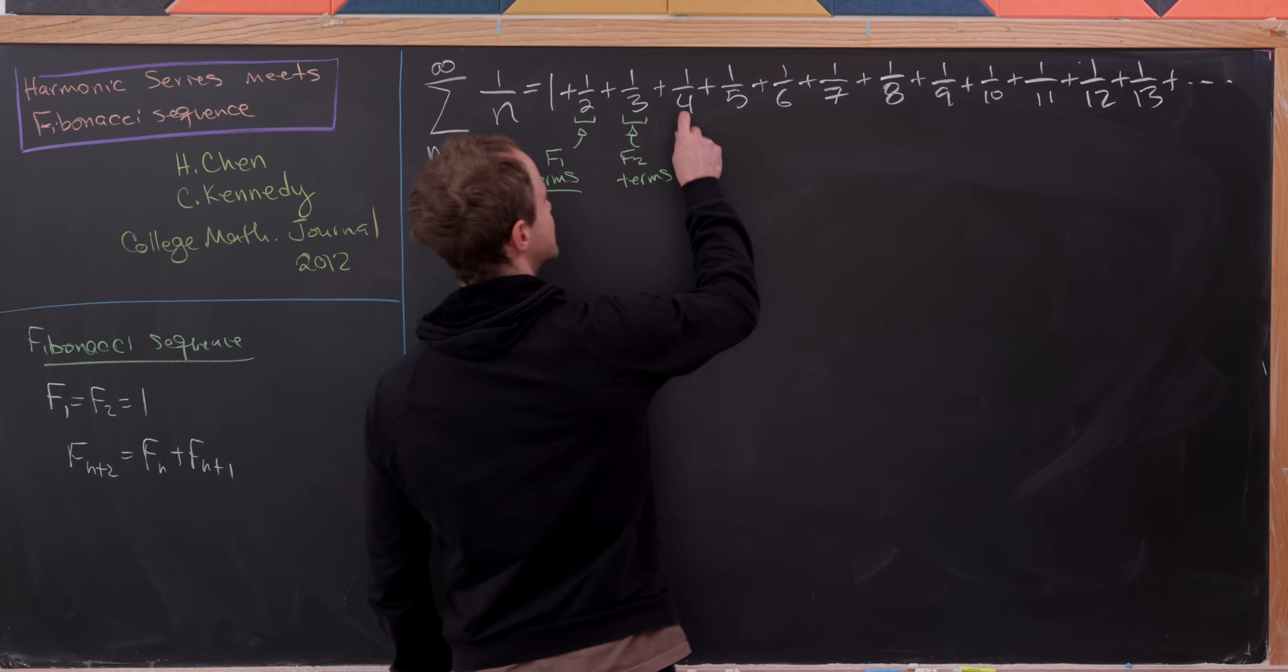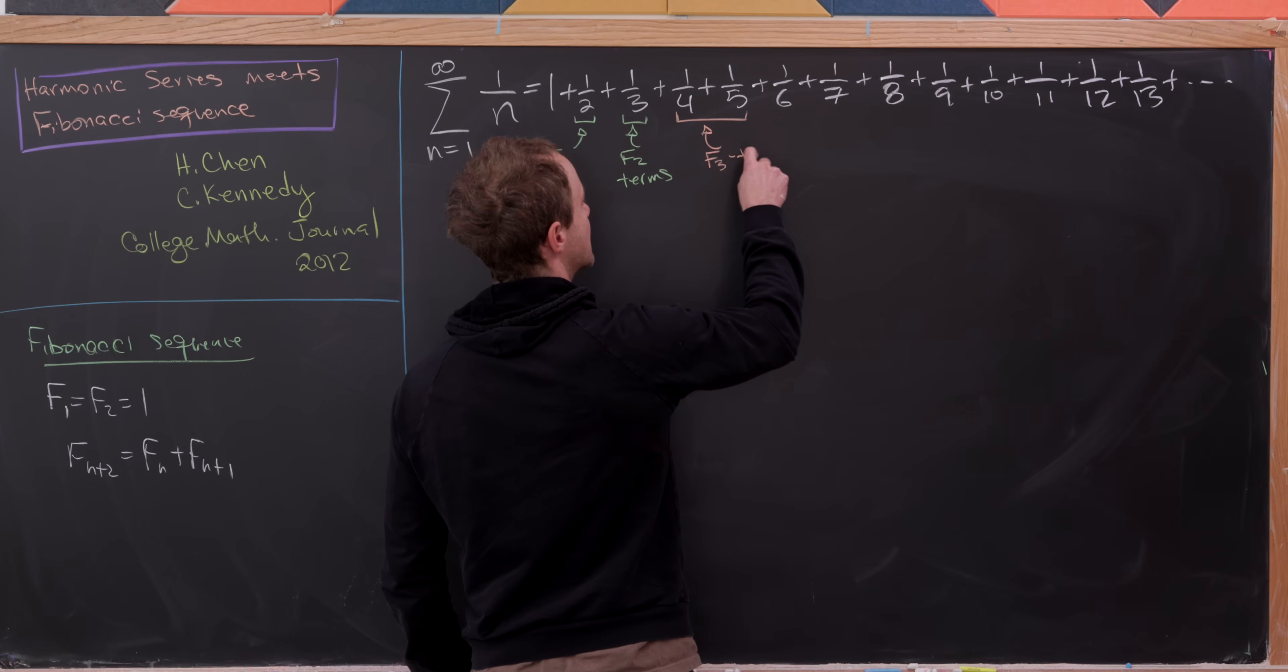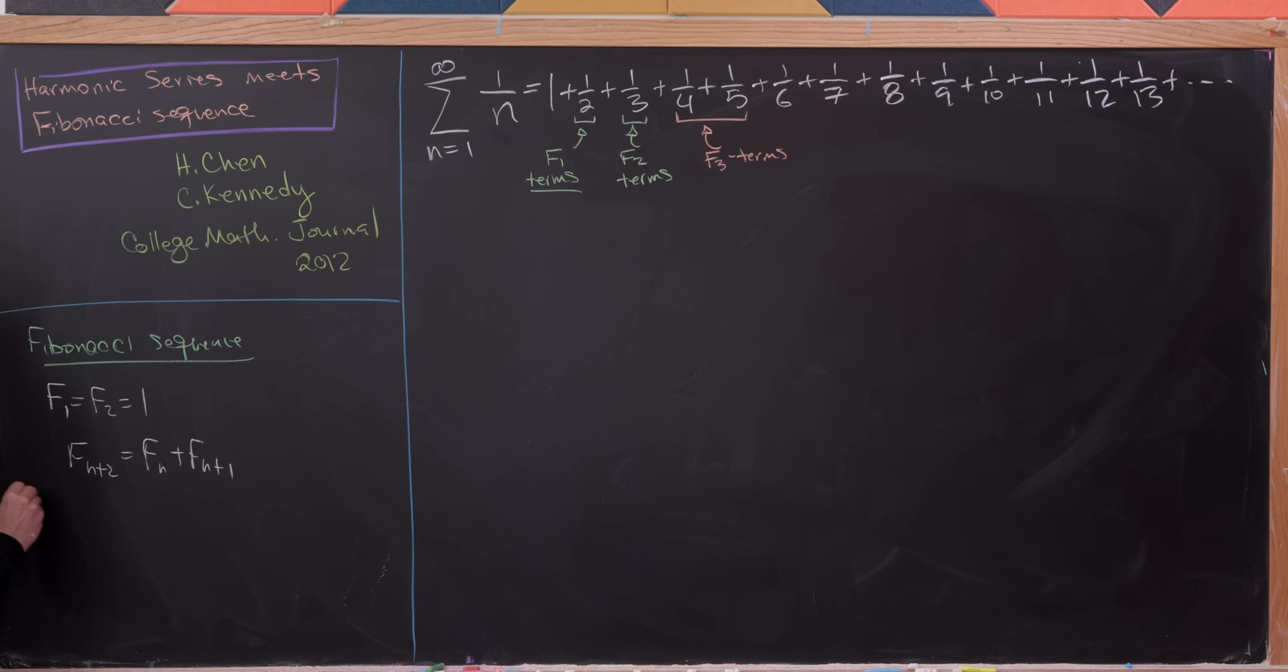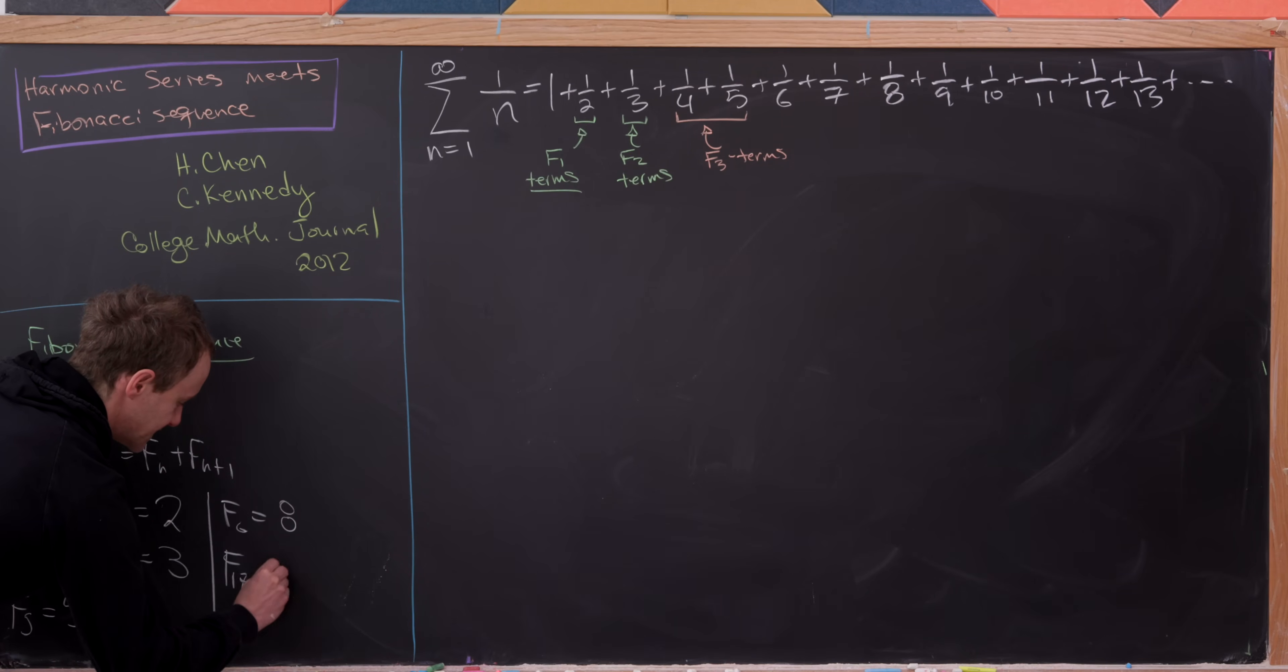But now let's group these two together and notice that this is a block which has F sub 3 total terms. And that's because F sub 3 is equal to F sub 1 plus F sub 2, which is equal to 1 plus 1, which is 2. And then while we're at it, let's notice that F sub 4 is F sub 3 plus F sub 2, which is going to be 2 plus 1 or 3. And likewise, F sub 5 is equal to 5, F sub 6 is equal to 8, and F sub 7 is equal to 13.